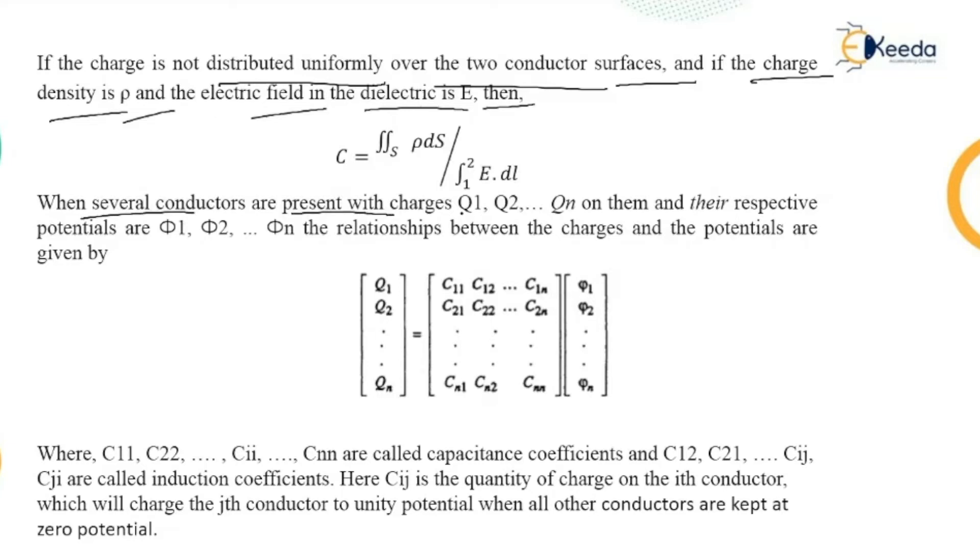When several conductors are present with charges on each conductor Q₁, Q₂ up to Qₙ and their respective potentials are φ₁, φ₂ up to φₙ, the relationship between the charges and the potentials are given in matrix form. So Q₁ = C₁₁, C₁₂ up to C₁ₙ,